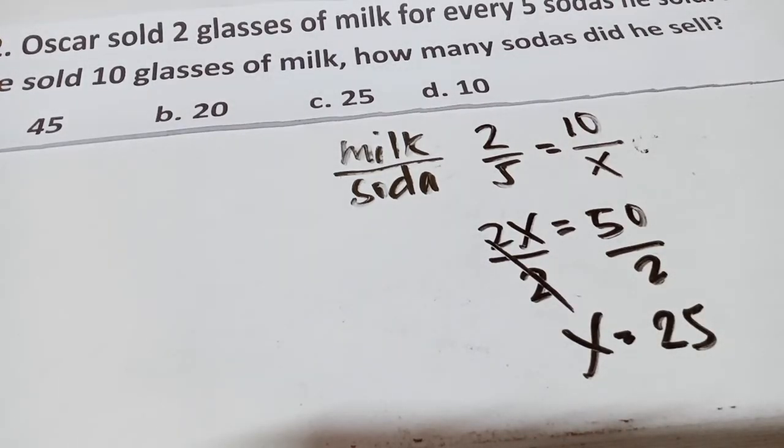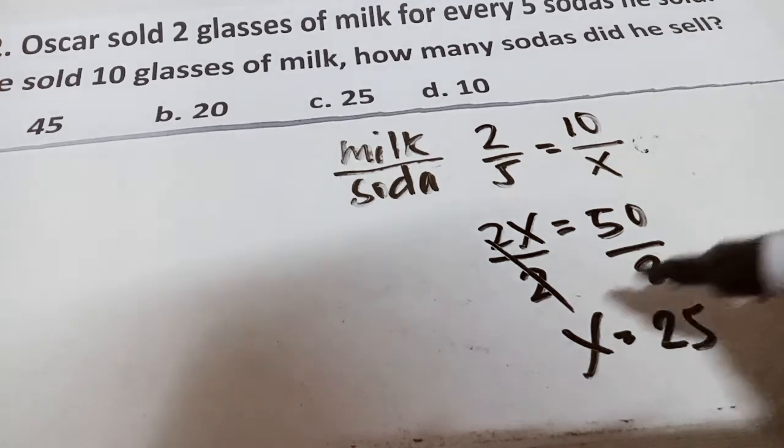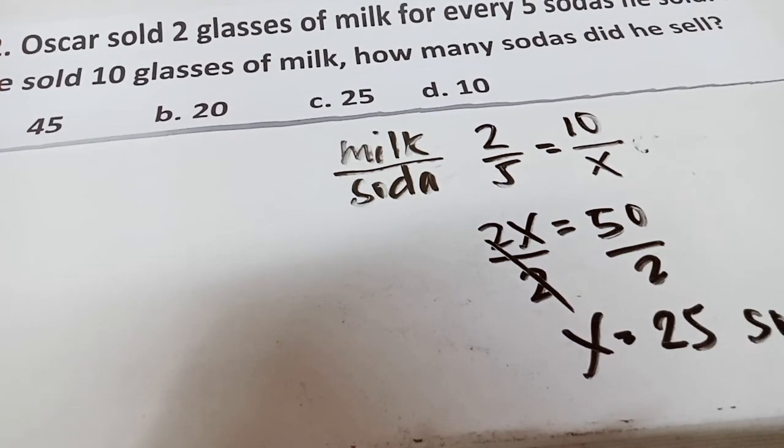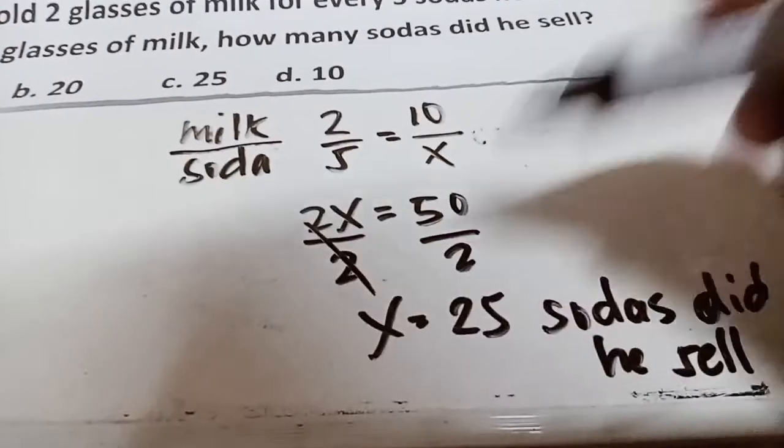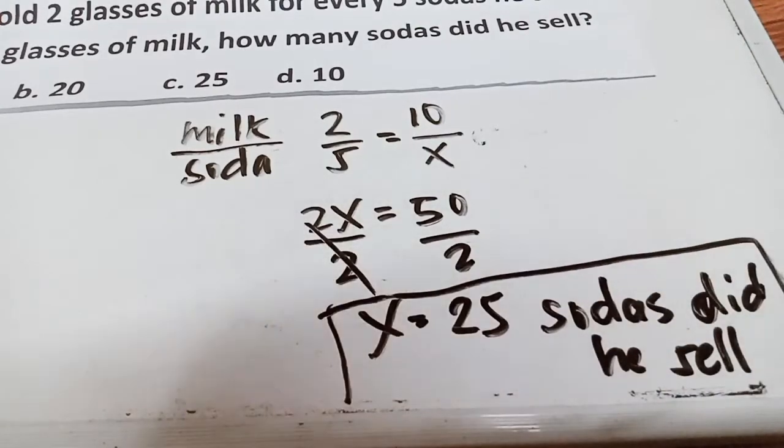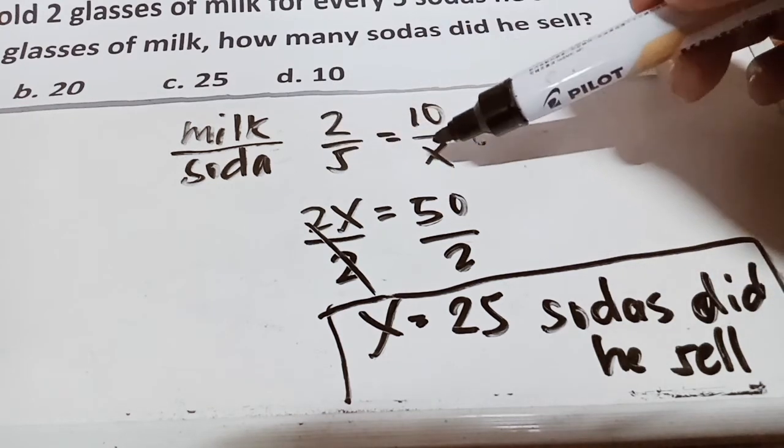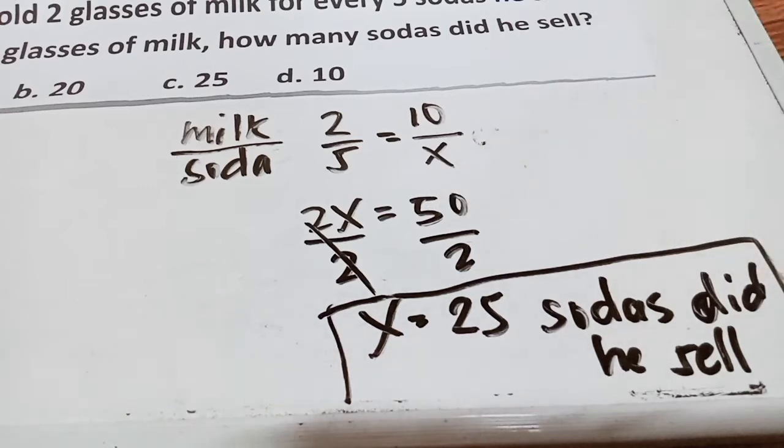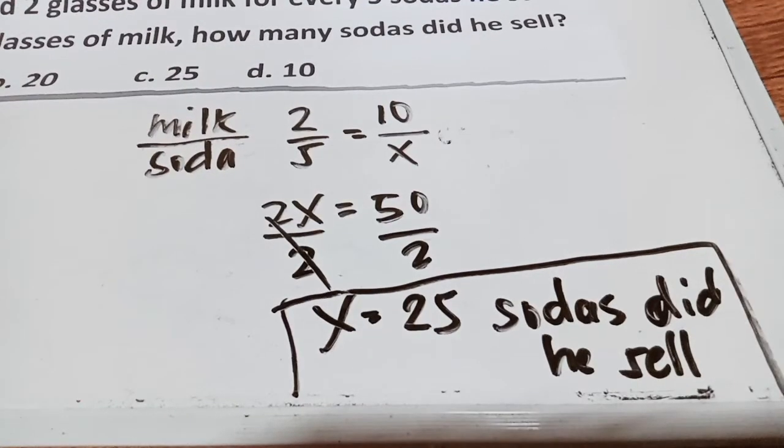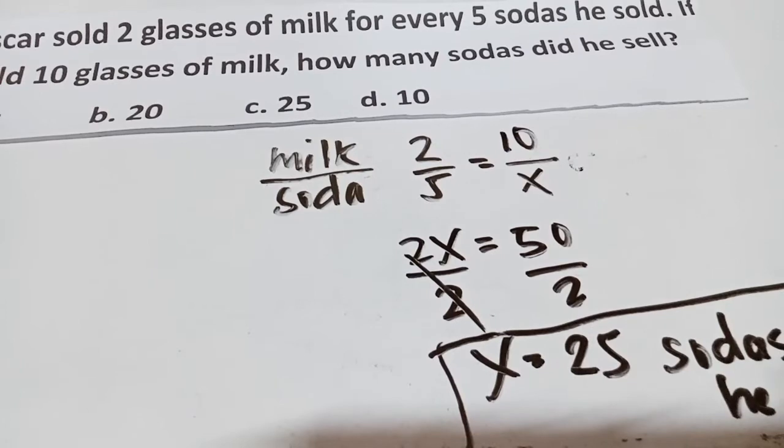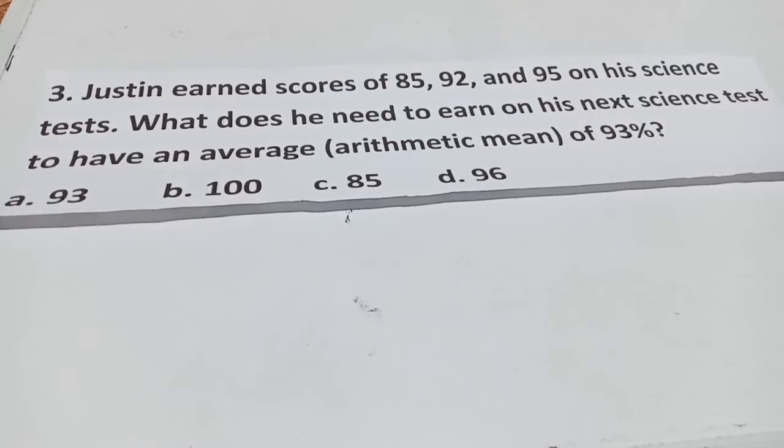Therefore, the total number of sodas he sell, did he sell, the answer is 25. Take note guys, the answer for number 2 is 25. 2 divided by 5, 10 divided by x. 2x, this will become the answer is 25.